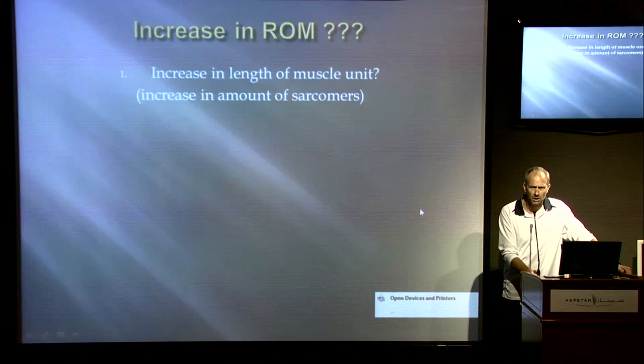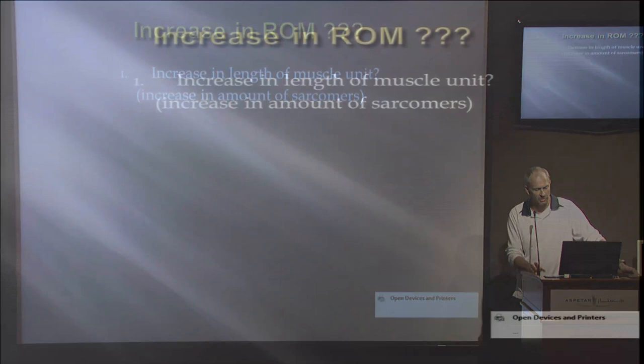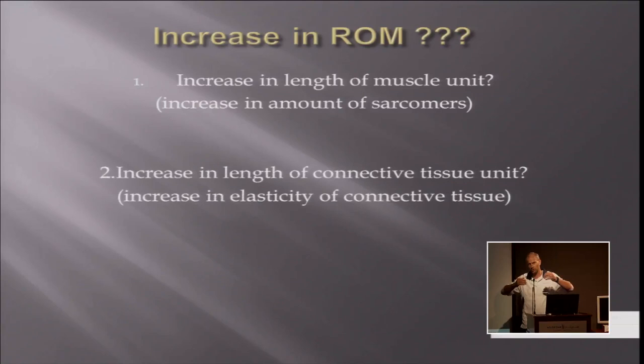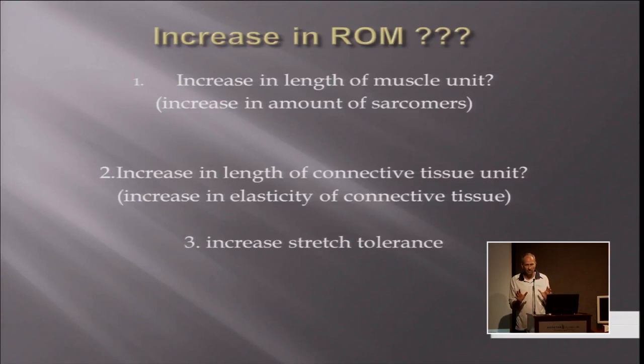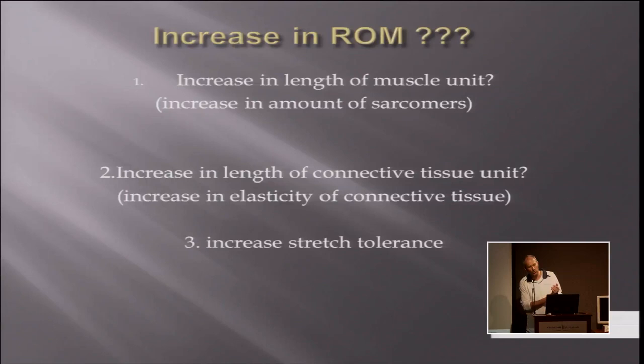So what is increasing the range of motion? Is it the muscle itself which is lengthening — and that could be by increasing the amount of sarcomeres? Is it the connective tissue? Because if we stretch, we don't only stretch the muscle — the muscle is connected with tissue and connected to the bone. So is it the tendon and the sheets around the muscle that we are lengthening? Or maybe we don't influence any tissue and we just change the stretch tolerance — after stretching for a few weeks, nothing is changing in the muscle itself and you simply tolerate more. These are the three main questions we need to answer.